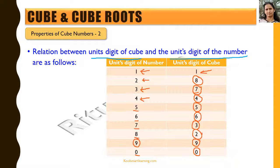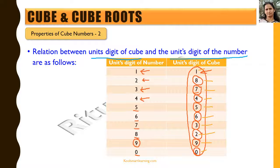Looking at the units digits of the cubes starting from 0 through 9, we cover all ten digits: 0, 1, 2, 3, 4, 5, 6, 7, 8, 9. So unlike perfect squares, where certain digits cannot appear in the units place, in cubes any digit can appear in the units place and it could still be a perfect cube. This means we cannot rule out a number being a perfect cube just by looking at its units digit.